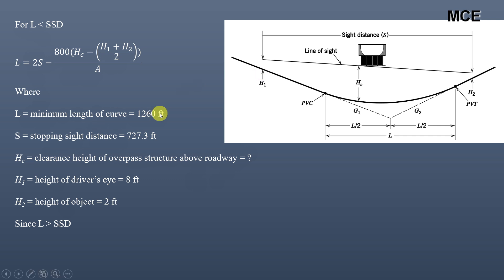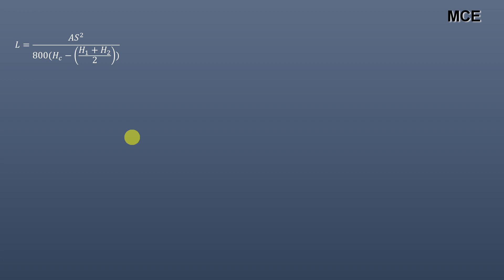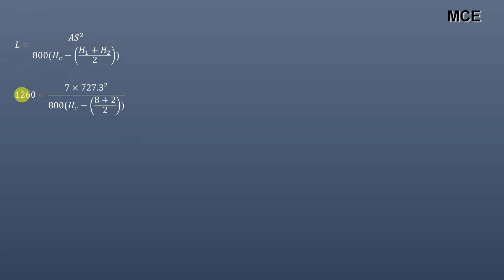Since in our case L of 1260 is greater than the SSD, we use the first formula: L equals A times S squared divided by 800 times (HC minus (H1 plus H2) divided by 2). We already know L, A, S, H1, and H2, so we can calculate the clearance height. Putting in L equals 1260, A equals 7, S equals 727.3, H1 equals 8, and H2 equals 2, we find that HC minus 5 equals 3.6, giving a clearance height HC equal to 8.67 feet.